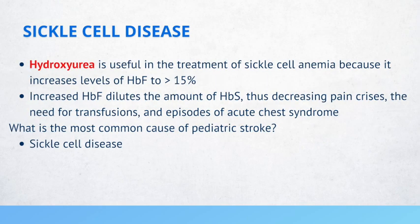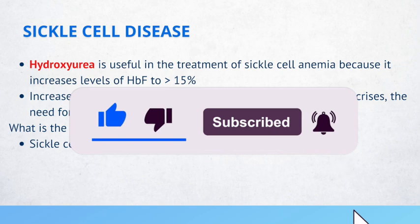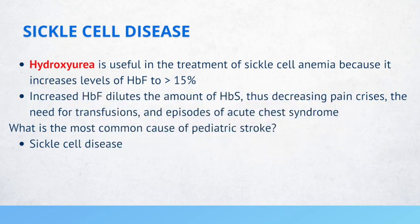Hydroxyurea is useful in the treatment of sickle cell anemia because it increases the levels of hemoglobin F to more than 15%. Increased hemoglobin F dilutes the amount of hemoglobin S, thus decreasing pain crises, the need for transfusions, and episodes of acute chest syndrome. What is the most common cause of pediatric stroke? Sickle cell disease. This slide is very high yield, so take a moment and commit these facts to memory.